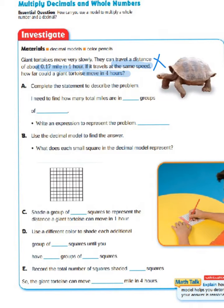Now, let's go down to part A. It says to complete this statement to describe the problem. Well, going back to our word problem, we did pull out the four hours and we did say that was going to be the number of groups. So, we're going to be looking at the total miles there are in four groups of. And the other number we have is the 1/100th mile in one hour. So, that gives us an idea that we're going to have four groups of 1/100ths.